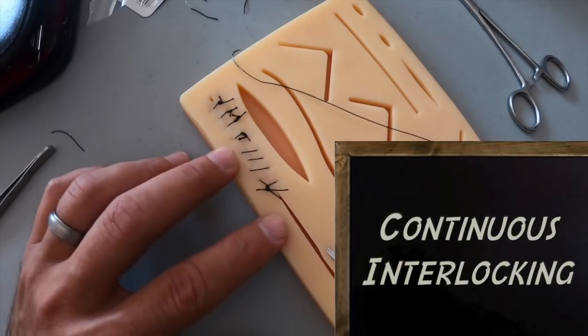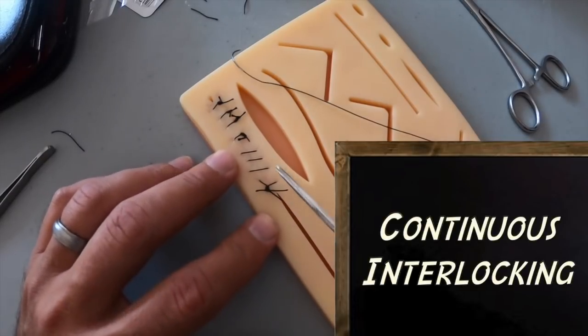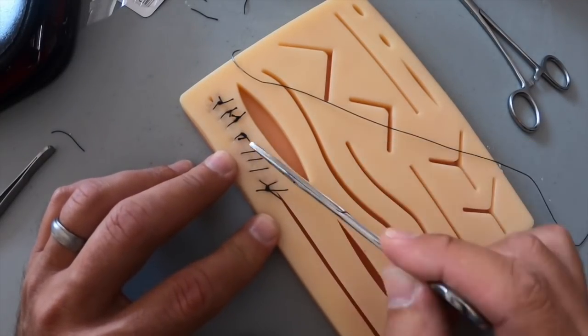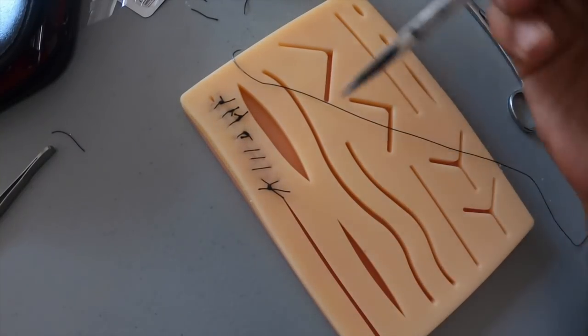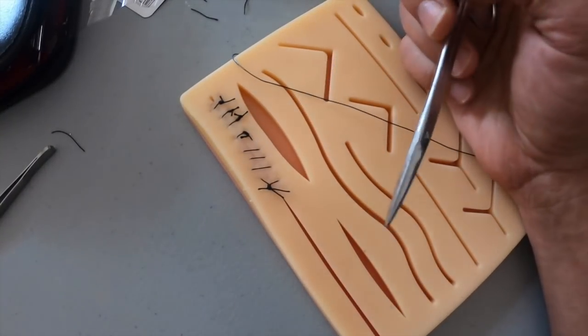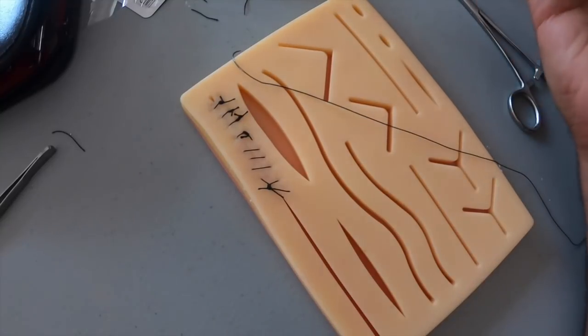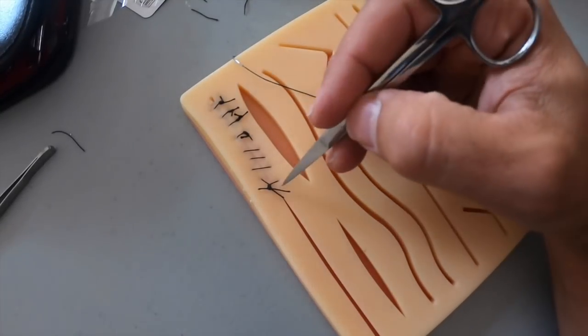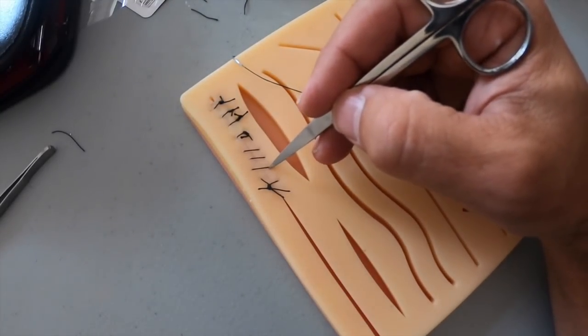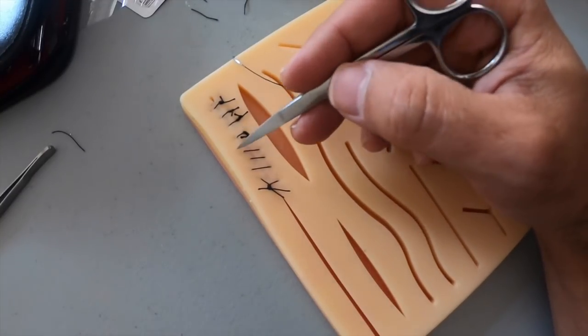Now we're going to do the simple interlocking. It's going to be just like this one, but each stitch is going to interlock to the next one. As I said before in the last video, the advantage of the interlocking is one, I like how it looks, and number two, it provides a great deal of hemostasis.